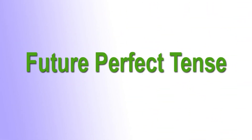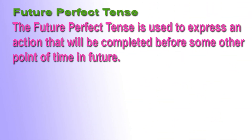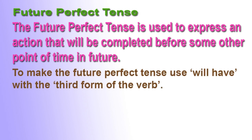Future perfect tense. The future perfect tense is used to express an action that will be completed before some other point of time in future. To make the future perfect tense, use 'will have' with the third form of the verb.